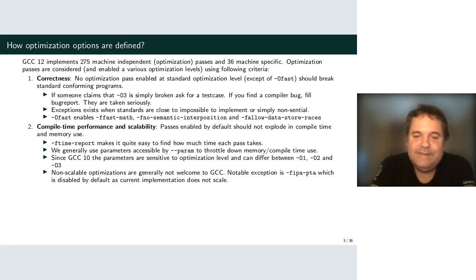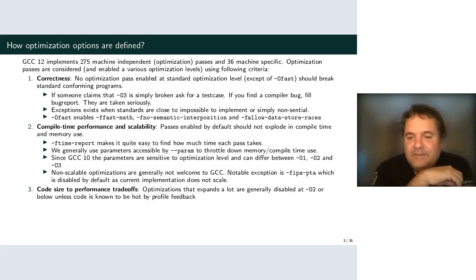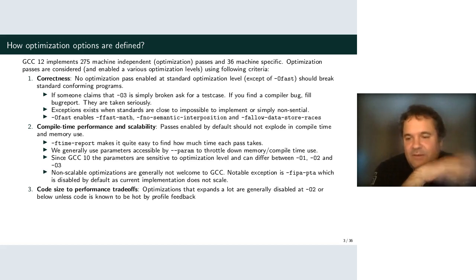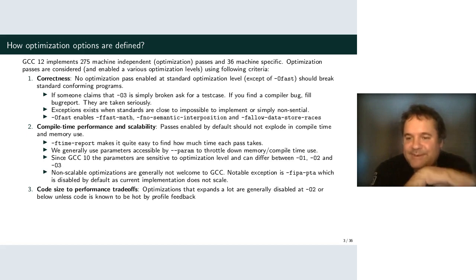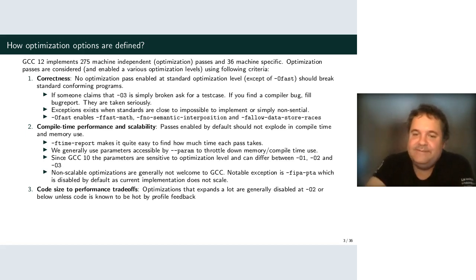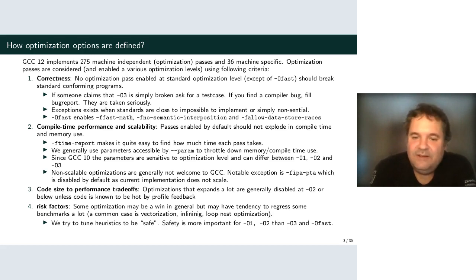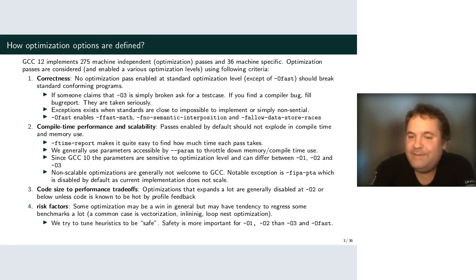There is IPA-PTA — the interprocedural points-to alias analysis — which explodes on any really large program especially with LTO, so it is disabled by default at all optimization levels. There's a plan to implement it better, which I'm working on right now. Another consideration is code size — optimizations may trade code size for performance. At O2 and below we generally want optimizations that don't trade too much code size for performance, while at O3 we're willing to trade more.